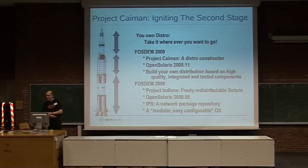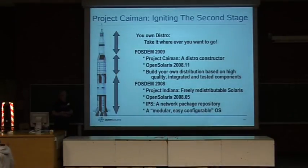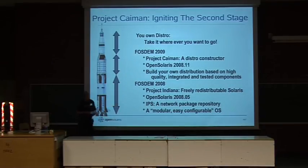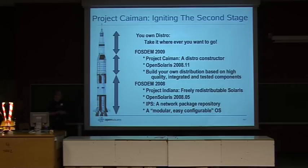Thank you for having me here again. Last year I spoke about our about-to-be-released OpenSolaris 2008. We released it last April, and the important thing was that it was the first time we had a fully redistributable Solaris, which was very modular and based on IPS — our packaging repository sitting on the web, very similar to the technology you get with Debian. This was a precondition to do the things we want to do with Project Kaiman, because we needed a modular operating system you can store easily in the pieces you need.